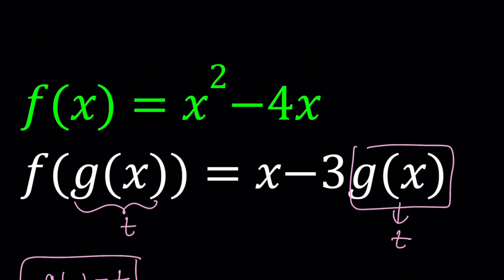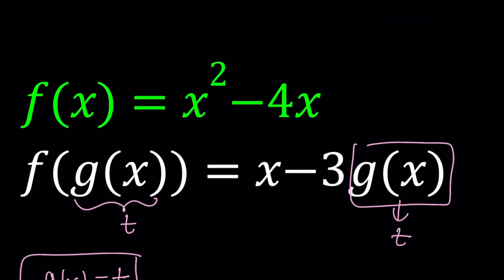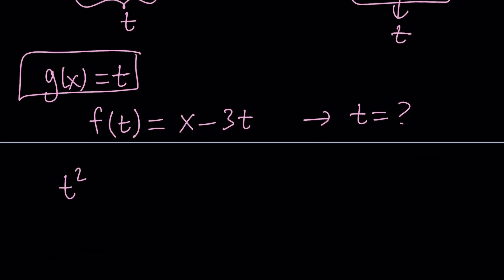So here's the good thing. We have f of x is equal to x squared minus 4x. So we can find f of t. So if you know that f of x is equal to this, what does f of t mean? It just means replace x with t on both sides. So f of t becomes t squared minus 4t.